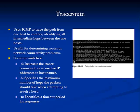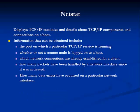Traceroute, or Tracert on Windows systems, is a utility that traces the path from one host to another, identifying all intermediate hops between the two nodes. This utility is useful for determining router or network connectivity problems. The NetStat utility displays TCP/IP statistics and details about TCP/IP components and connections on a host, and is helpful to determine what services are running and what connections are active.